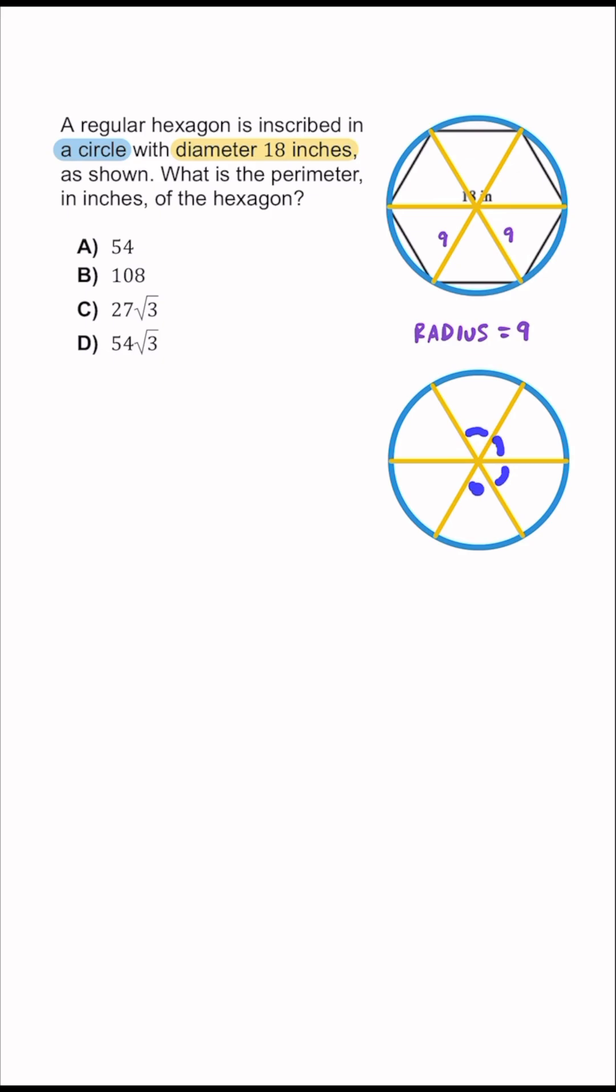We have one, two, three, four, five, six of these identical or congruent central angles. So we take the entire circle here of 360 degrees and then split it evenly amongst the six central angles here. We're going to know that each of these central angles must be 60 degrees.